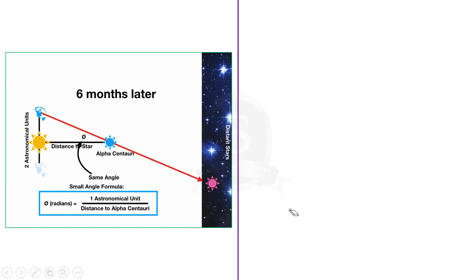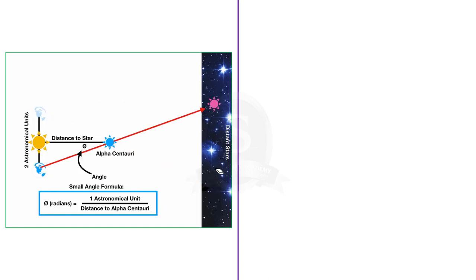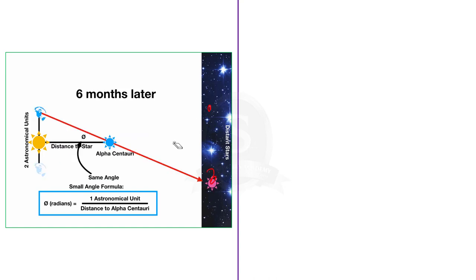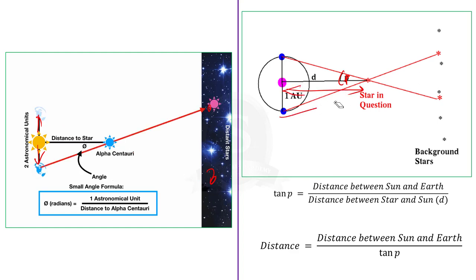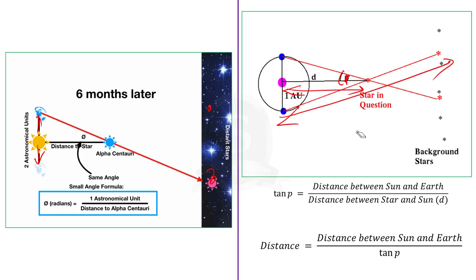Look at this image. This is the actual position of the star, and these two are the apparent positions of the star based on the position of Earth. By observing the angle subtended by the apparent positions of the star, and as we already know the distance between the sun and Earth, we can find the distance using a simple formula. We know tan p equals opposite by adjacent. Here, opposite is the distance between the sun and Earth, which we already know. We also know the angle p. Using this information, we can find the adjacent, which is the distance between the sun and the star.